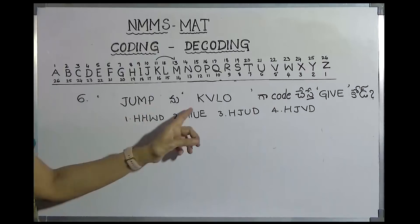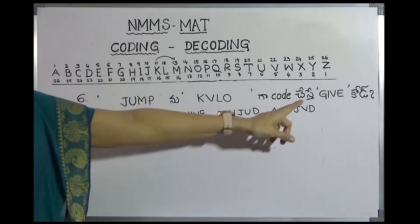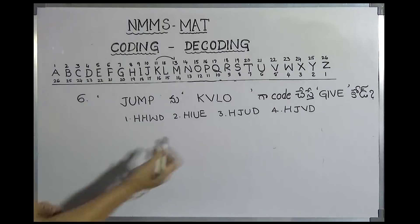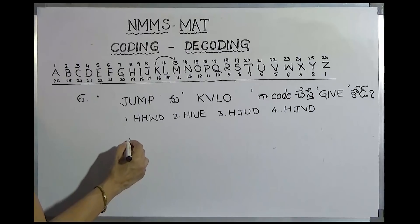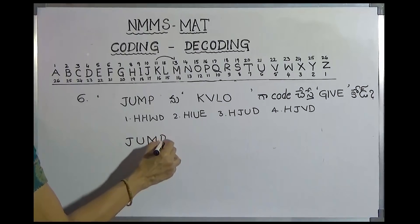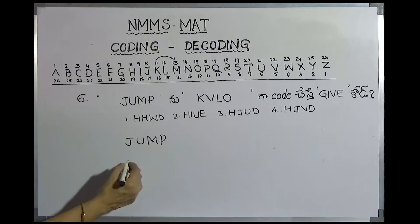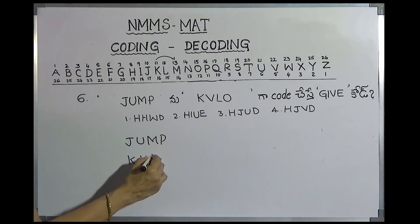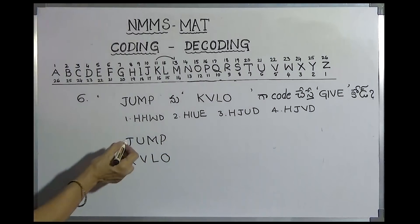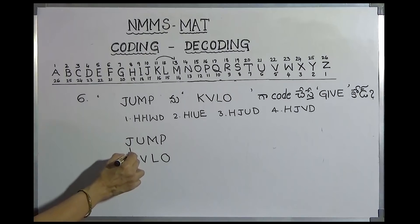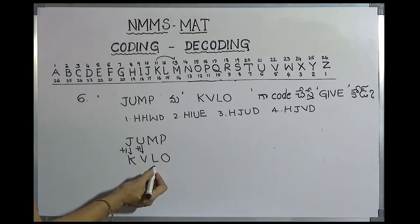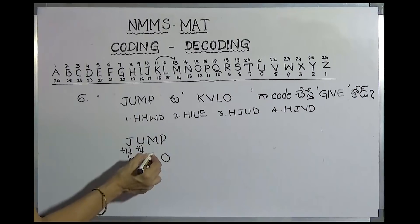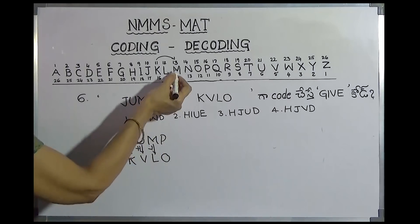J, U, M, P. J, U, M, P. This is K, V, L, O. This is G, I, V. This is 4 options. This is the original code J-U-M-P. Coding is K, V, L, O. The original code — J, K. Direct J is plus 1. U, V — this is plus 1. This is L, M. It's the original code.